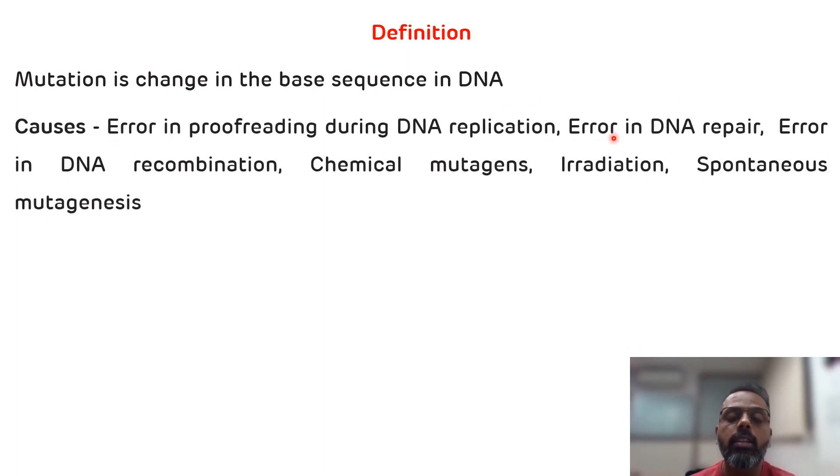Third one, if there is an error in the DNA recombination, then by means of chemical mutagens, then by means of irradiation and the last one is spontaneous mutagenesis. These are the causes which can lead to mutation. And the agents which cause mutation are known as mutagens.